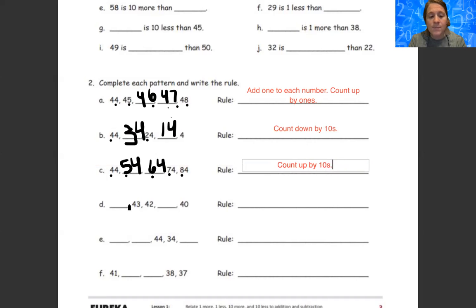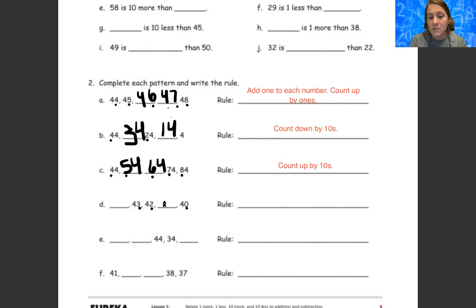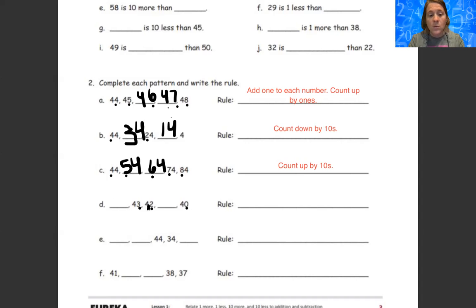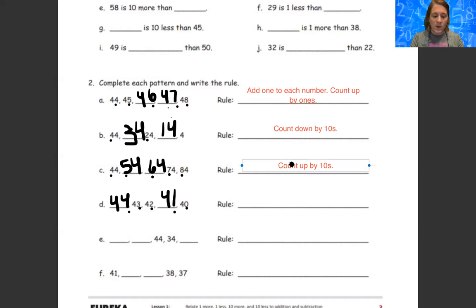Let's do D together. We have blank, 43, 42, blank, 40. The ones place value is changing — we had three, then two, then blank, then zero. It started at three and ends with zero, so it's counting down by ones. The number before 43 was 44, then 43, 42, 41, then 40. Our rule was count down by ones.